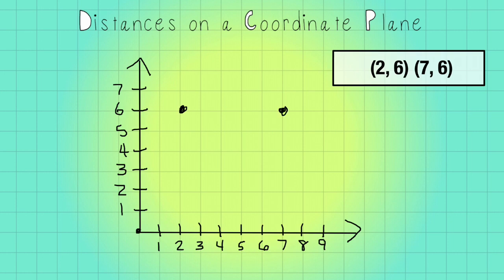To do that, we're really just going to find the distance between them. So one, two, three, four, five. So the distance in this case is five.